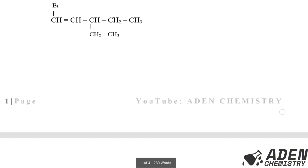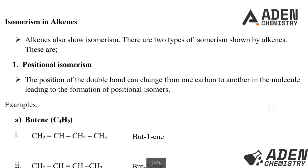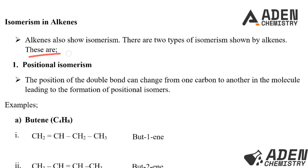We proceed to isomerism in alkenes. Alkenes also show isomerism. There are two types of isomerism shown by alkenes. Number one, we are having positional isomerism. The position of the double bond can change from one carbon to another in the molecule, leading to the formation of positional isomers.